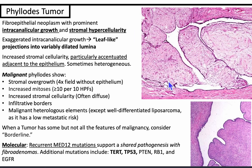Phylloides tumors have increased stromal cellularity, particularly around the epithelium. Features of malignant phylloides include: stromal overgrowth — defined as when on a 4x field you only see stroma — increased mitoses greater than or equal to 10 per 10 high power fields, diffuse stromal cellularity, and infiltrated borders. Even if you don't have all four criteria, if you just have malignant heterologous elements like chondrosarcoma, osteosarcoma, or poorly differentiated liposarcoma, then it's automatically malignant phylloides tumor.